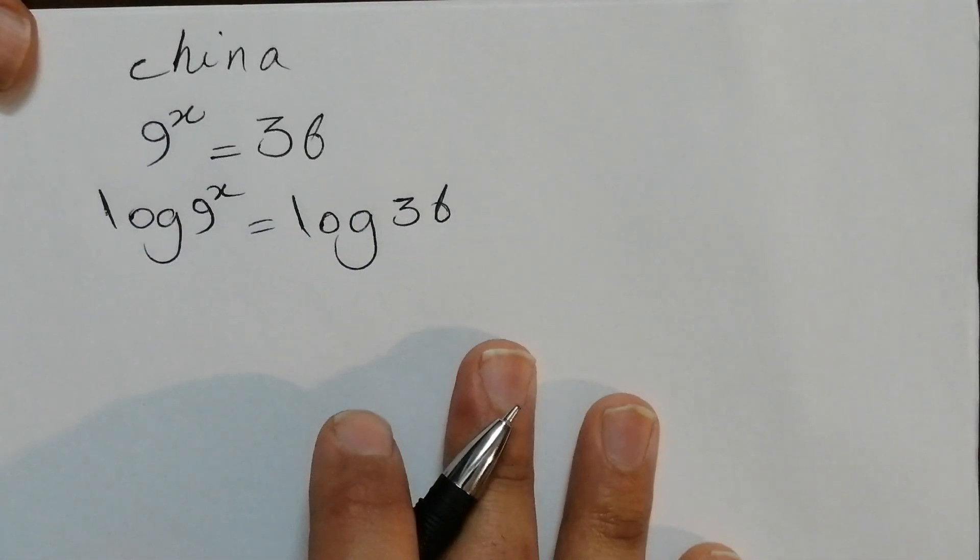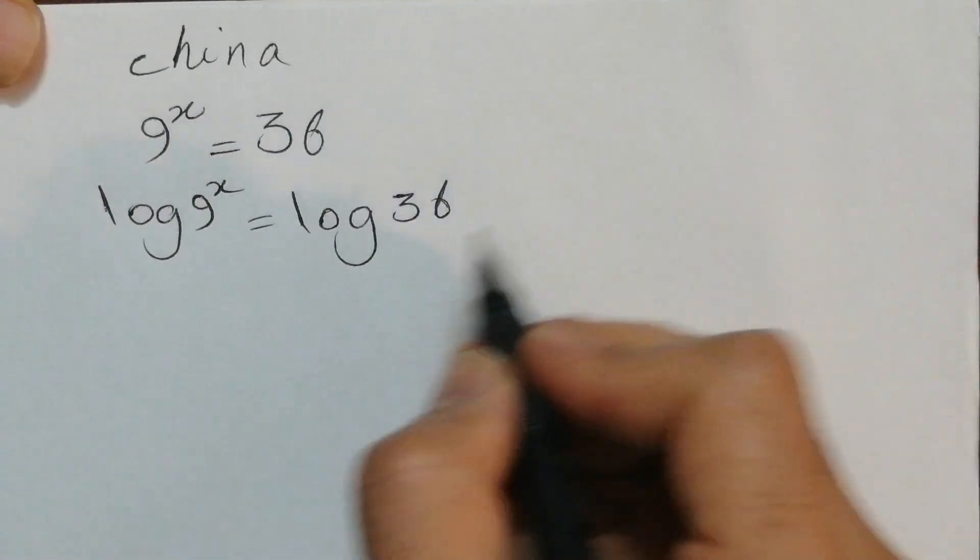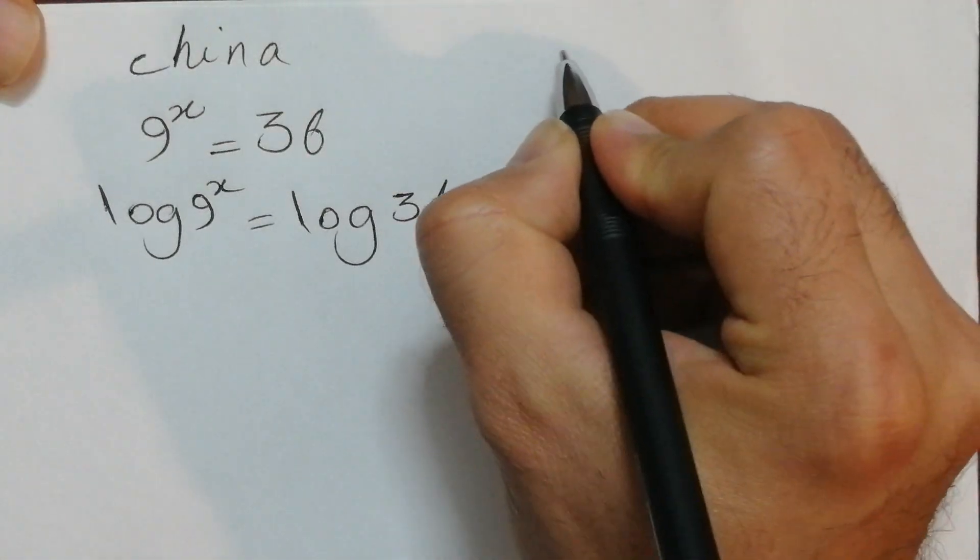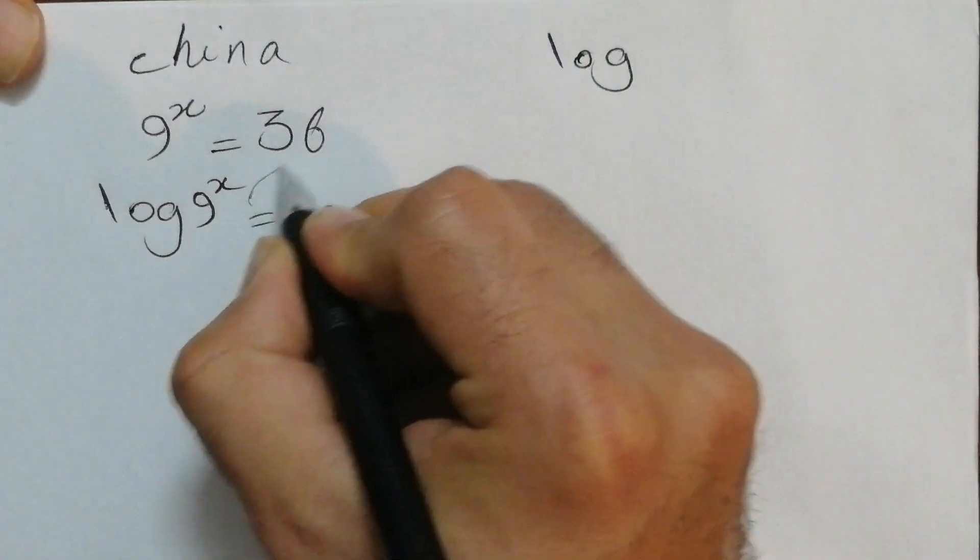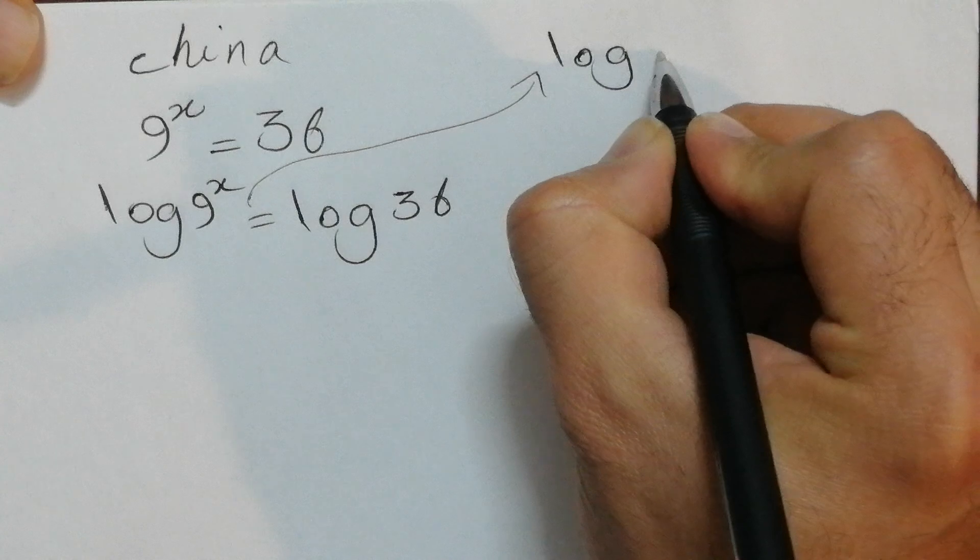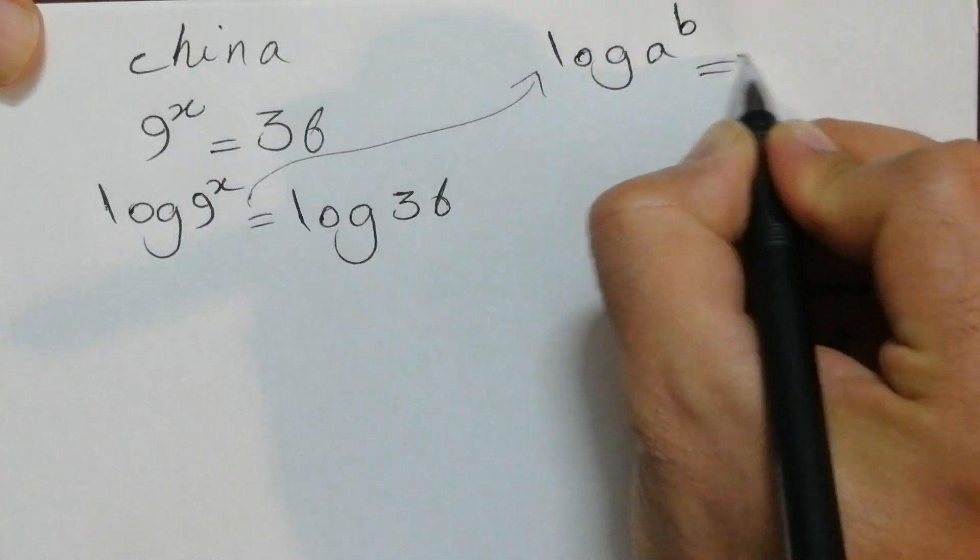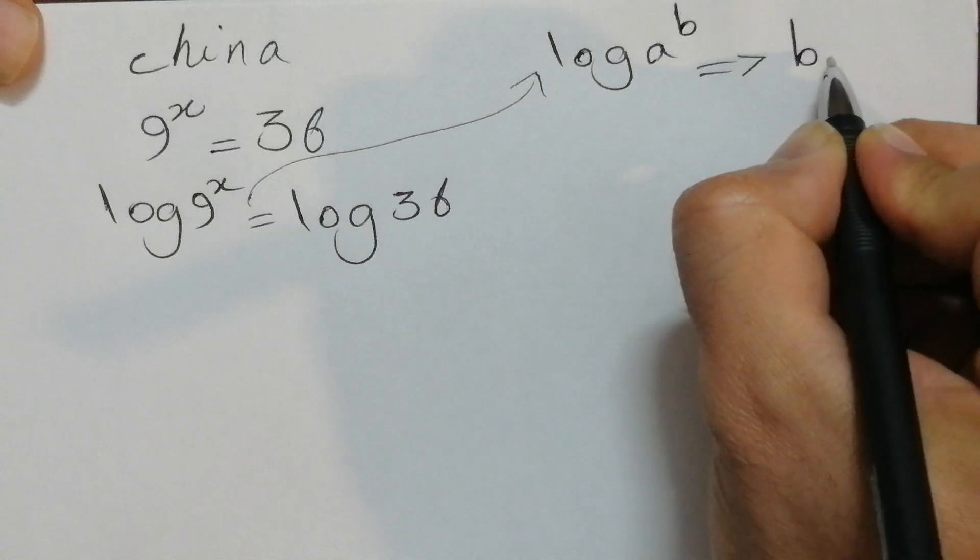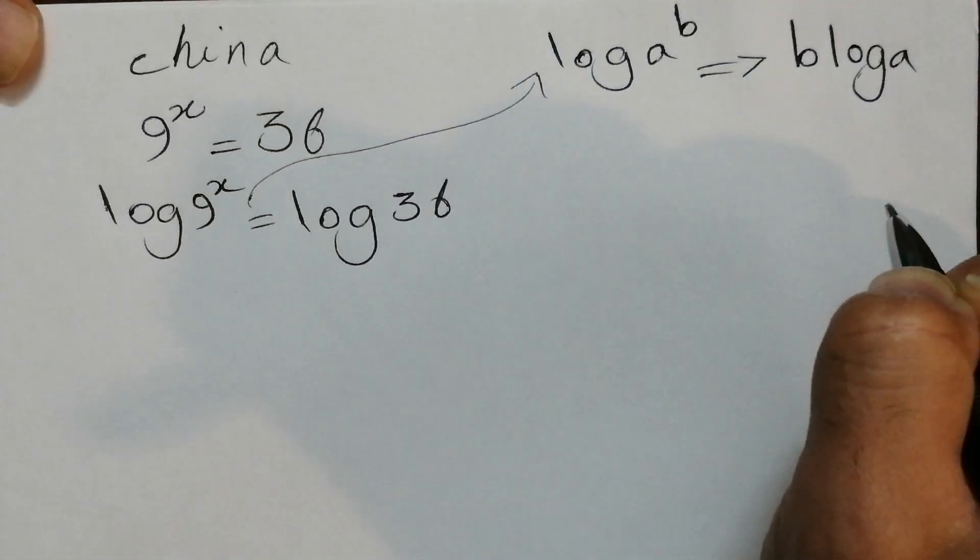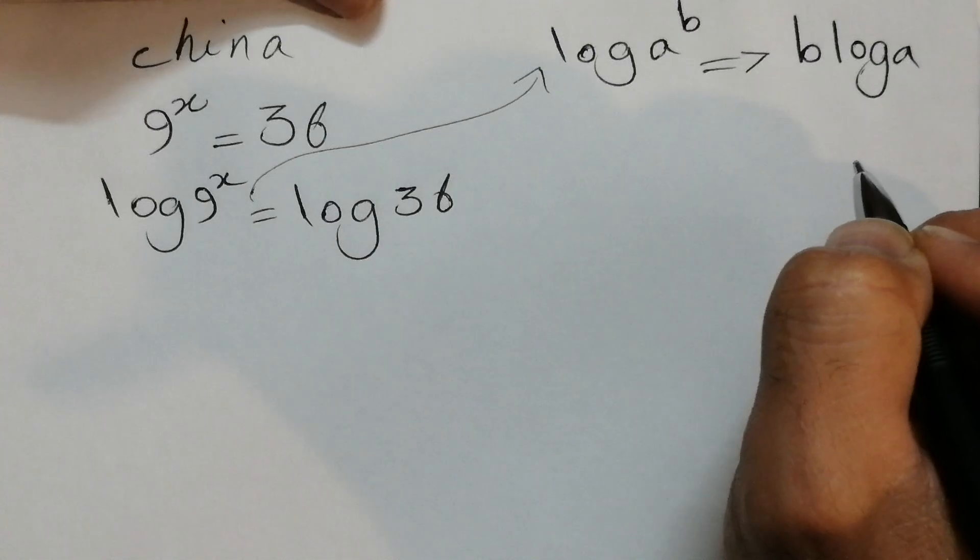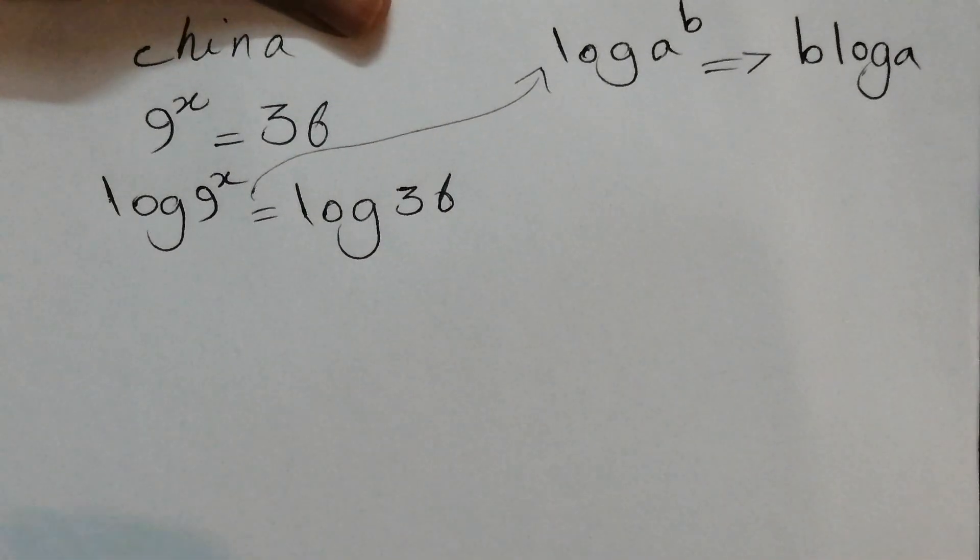Can you guess what's next? Here we can use a law of logarithms. Whenever we have log a to the power of b, we can rewrite it as b log a or b times log a. Basically we put the exponent behind the logarithm.